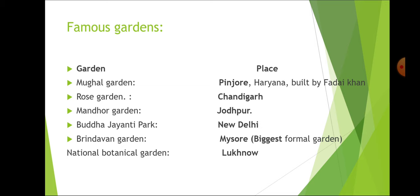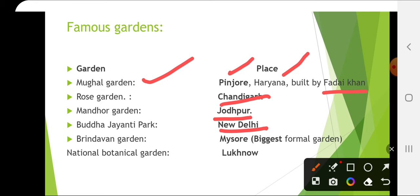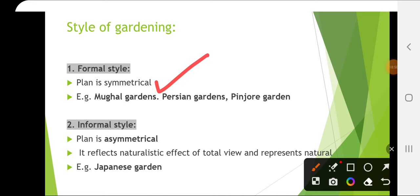The famous gardens: Mughal Gardens have proper symmetry with even separation. Mughal Garden locations include Pinjore in Haryana (built by Fadai Khan), Rose Garden in Chandigarh, Mandore Garden in Jodhpur, Buddha Jayanti Park in New Delhi, Brindavan Garden in Mysore (the biggest formal garden), and National Botanical Garden in Lucknow. Mughal Gardens, Persian Gardens and Pinjore Gardens are examples of formal style of gardening, where the plan is symmetrical.